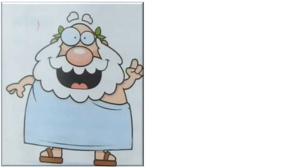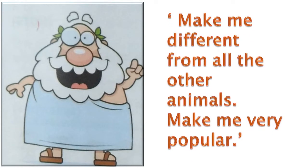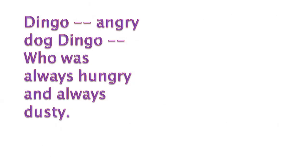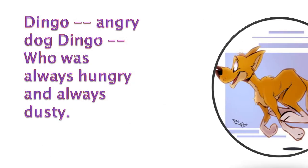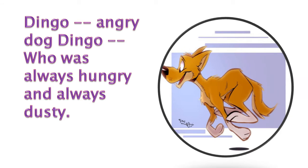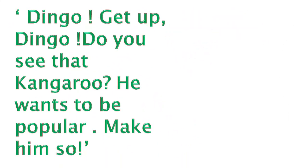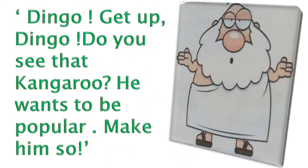He went to the great god named Wang and asked him to make the kangaroo different from all the other animals. The great god Wang agreed to make him different. He called his dog named Dingo and asked him to make the kangaroo popular and different from other animals. Then Dingo started running after the kangaroo.